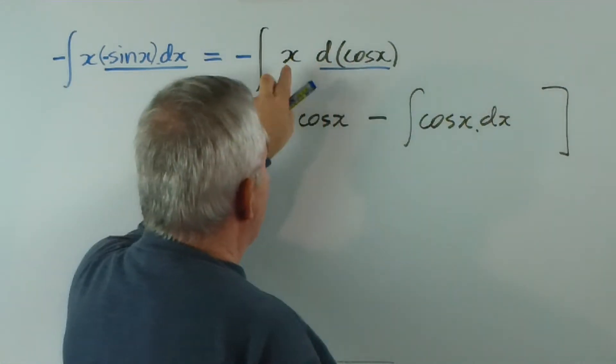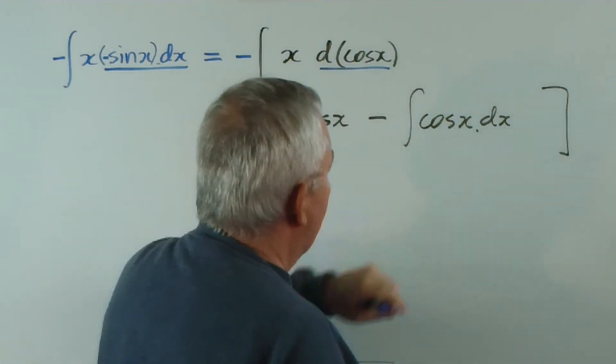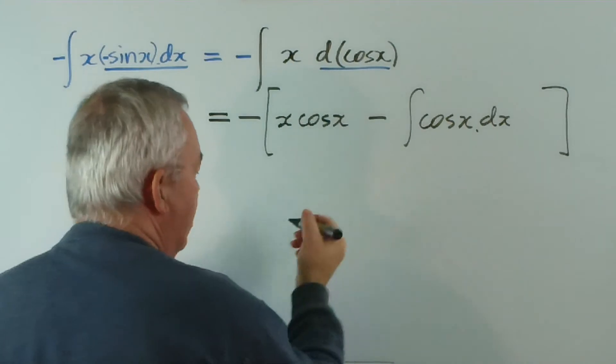So, cos x comes out, the x goes in, we have dx. And this is quite an easy integral to perform.